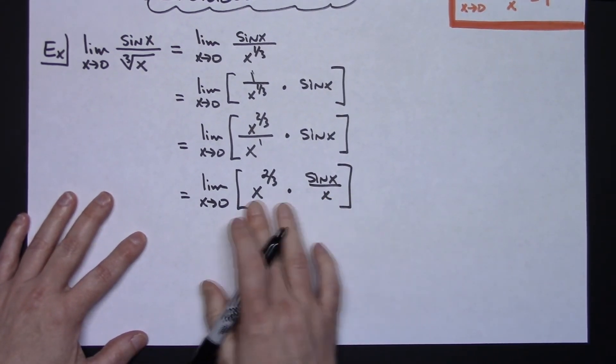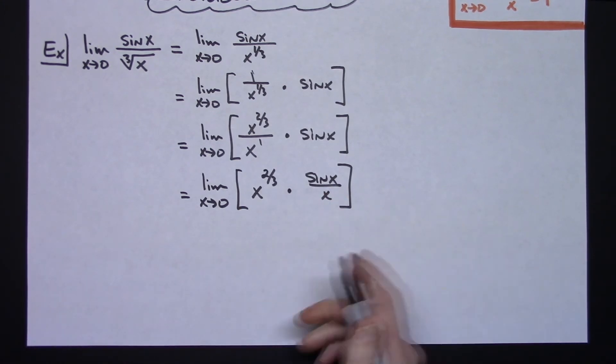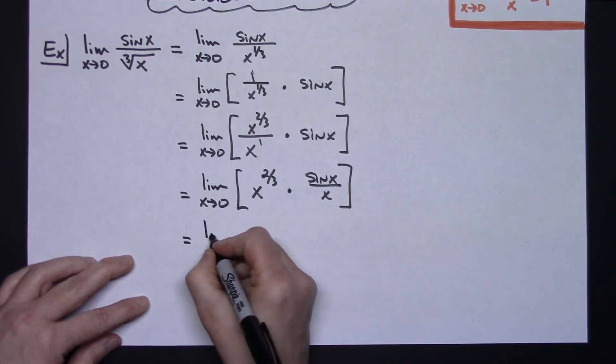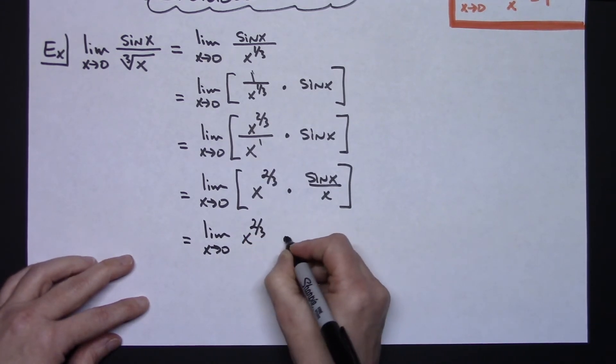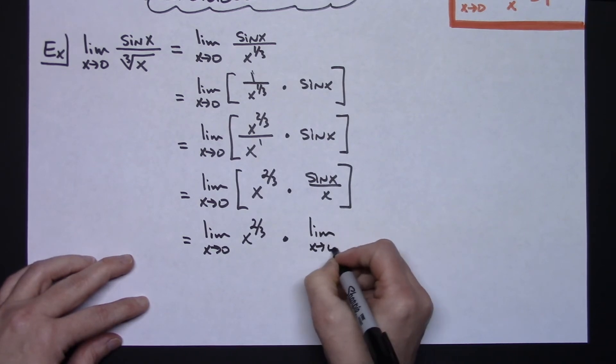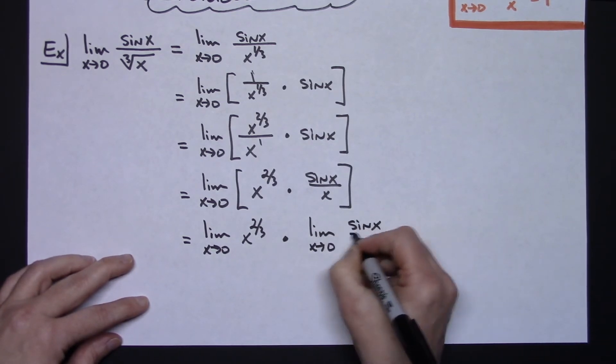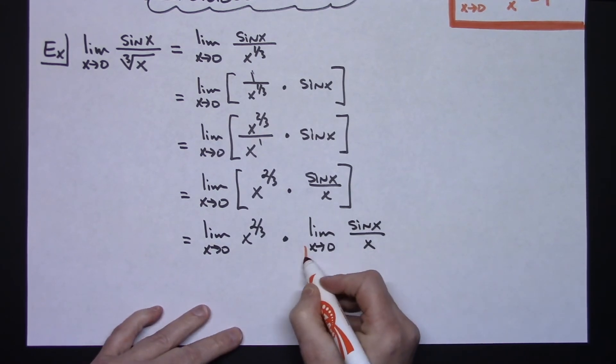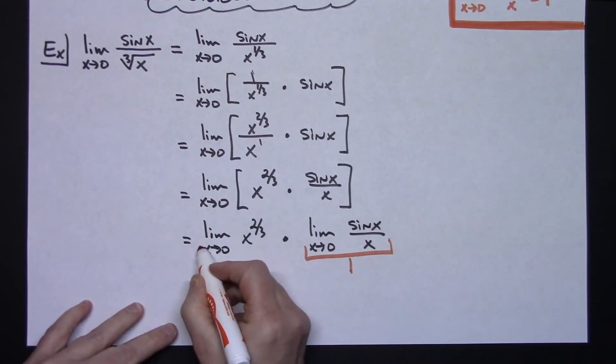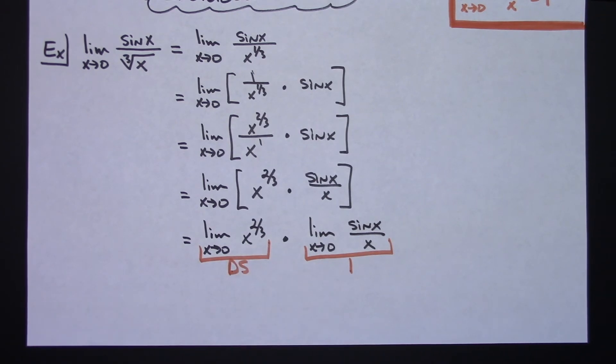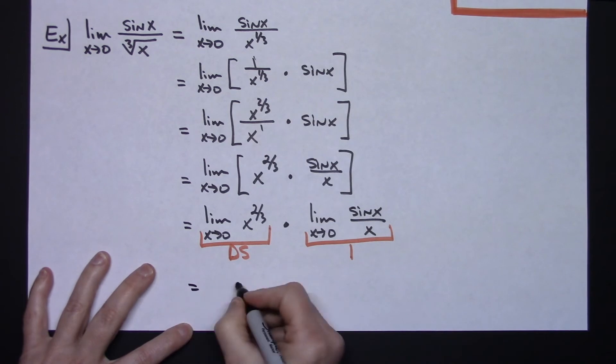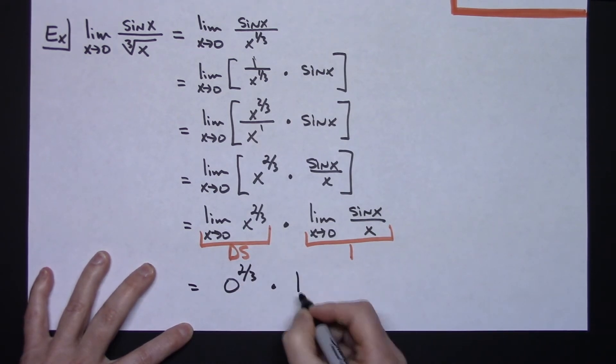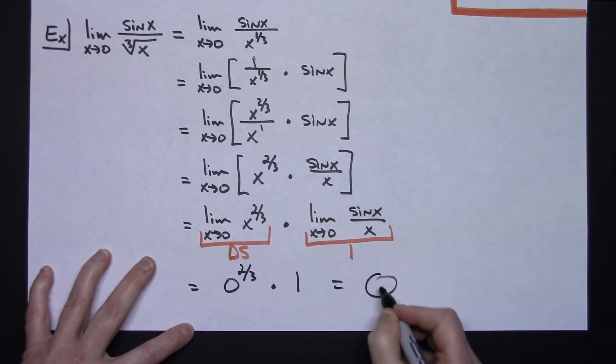I can use properties of limits and take the limit of each individually. The limit as x approaches zero of x to the two-thirds times the limit as x approaches zero of sine x over x. This equals one, and for the first part I do direct substitution. Zero raised to the two-thirds power times one gives an overall limit of zero.